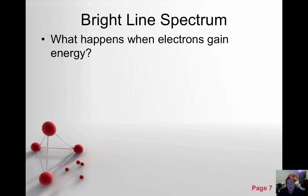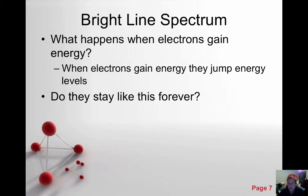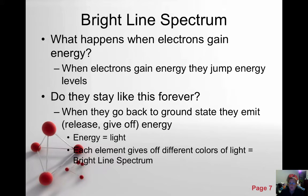You actually learned about this in earth science — the bright line spectrum. We've talked about this in terms of looking at stars and seeing what type of elements the stars are made up of. When electrons gain energy, they jump energy levels, move out from the center, and become excited. They want to be stable, so they return back to the ground state and emit that energy. They give off that energy in the form of light, and each element gives off different colors of light. This is called the bright line spectrum.